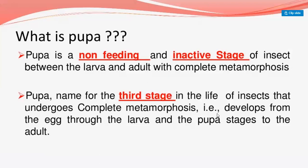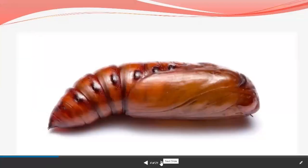Mainly, the pupa is a non-feeding and inactive stage. Pupa is a sluggish, immobile stage present in the life cycle of insects and is part of complete metamorphosis. This is the structure of pupa — a non-feeding and inactive stage occurring before the adult stage.